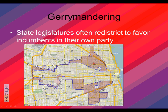The last one is gerrymandering, or more politically correctly called redistricting. When state legislatures redraw district lines, they are doing this to protect incumbents. They will make deals and trade off: I'll draw this district to help a Democrat, I'll draw another to help a Republican. We can keep those same people in office, and that keeps government kind of stable.